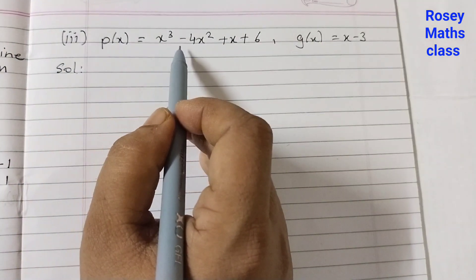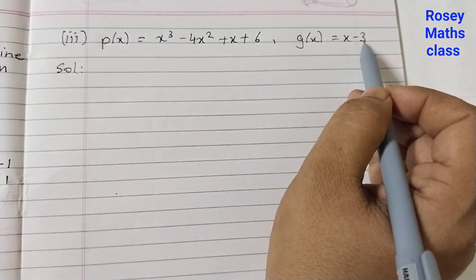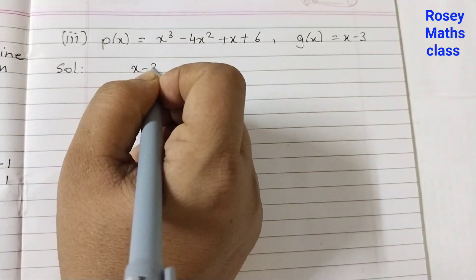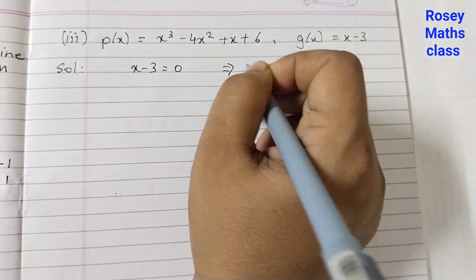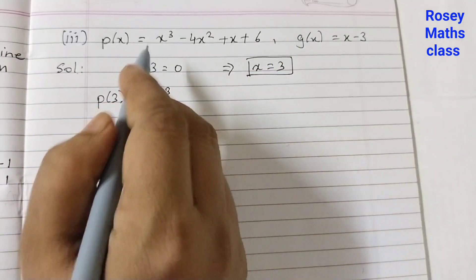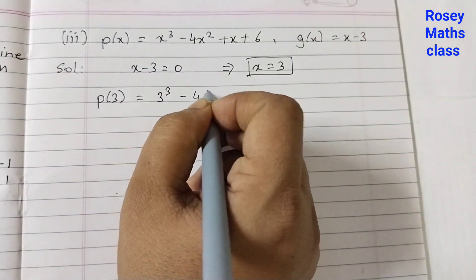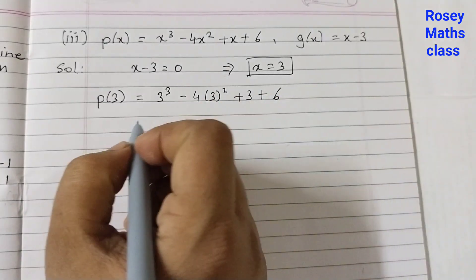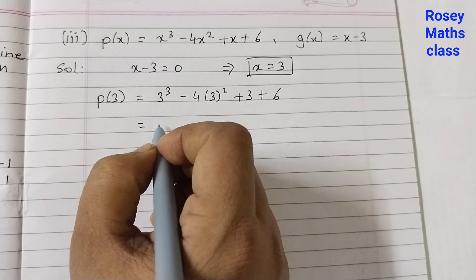Coming to the last part: p(x) = x³ − 4x² + x + 6, and g(x) = x − 3. Using the factor theorem, we set x − 3 = 0, which implies x = 3. So we need to find p(3): 3³ − 4(3²) + 3 + 6. Now 3 × 3 × 3 = 27.